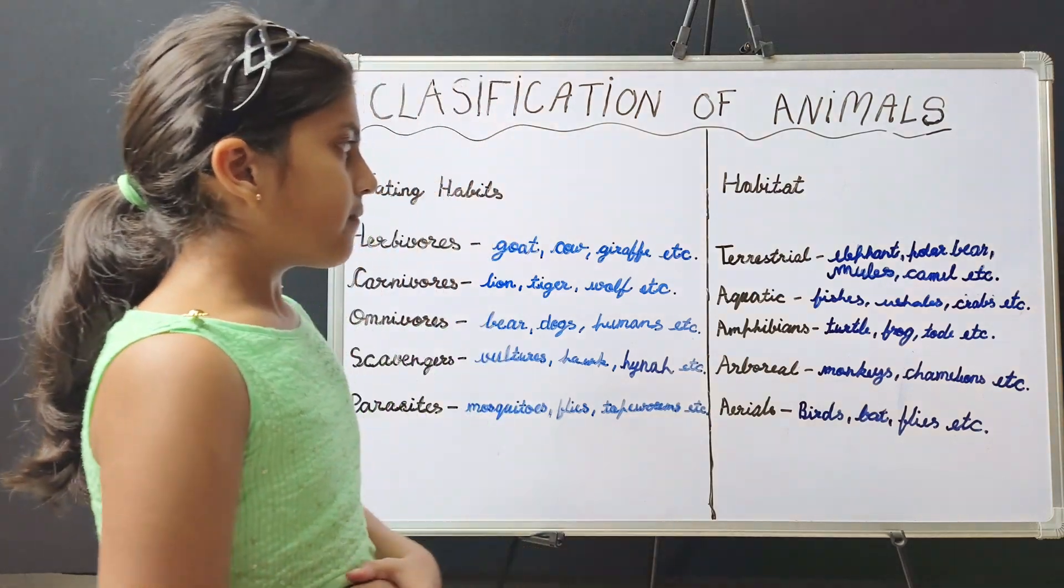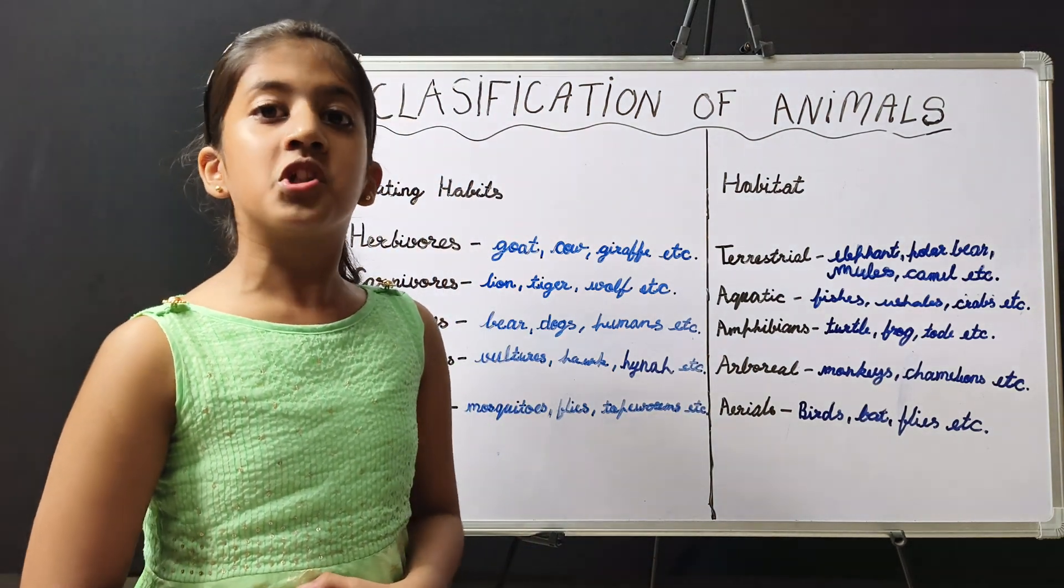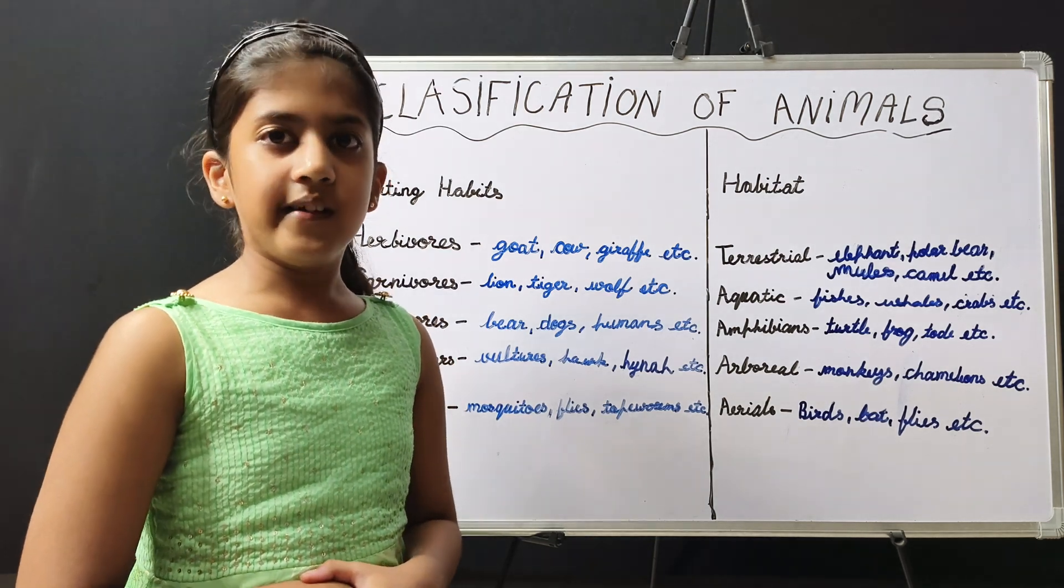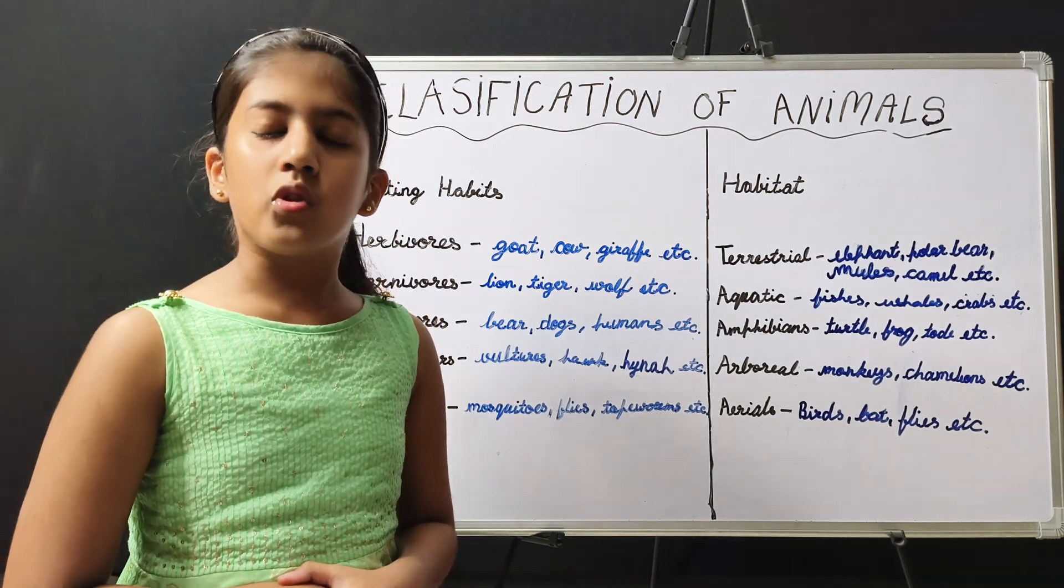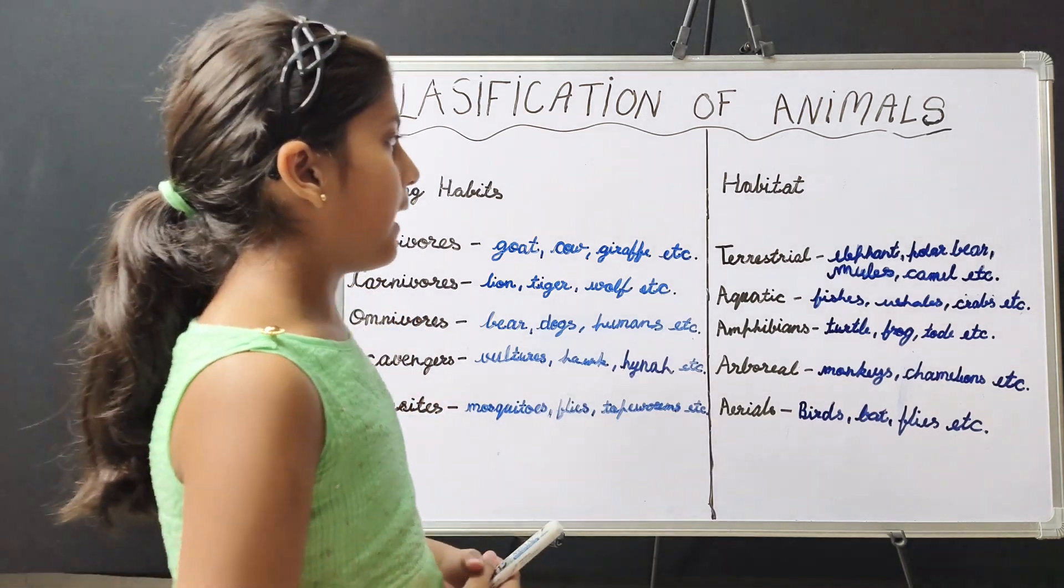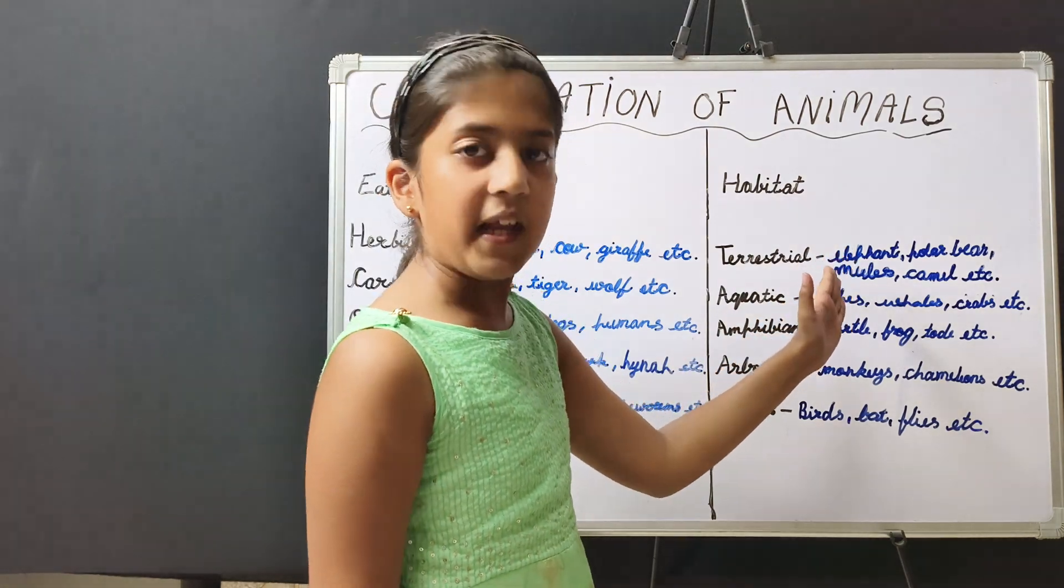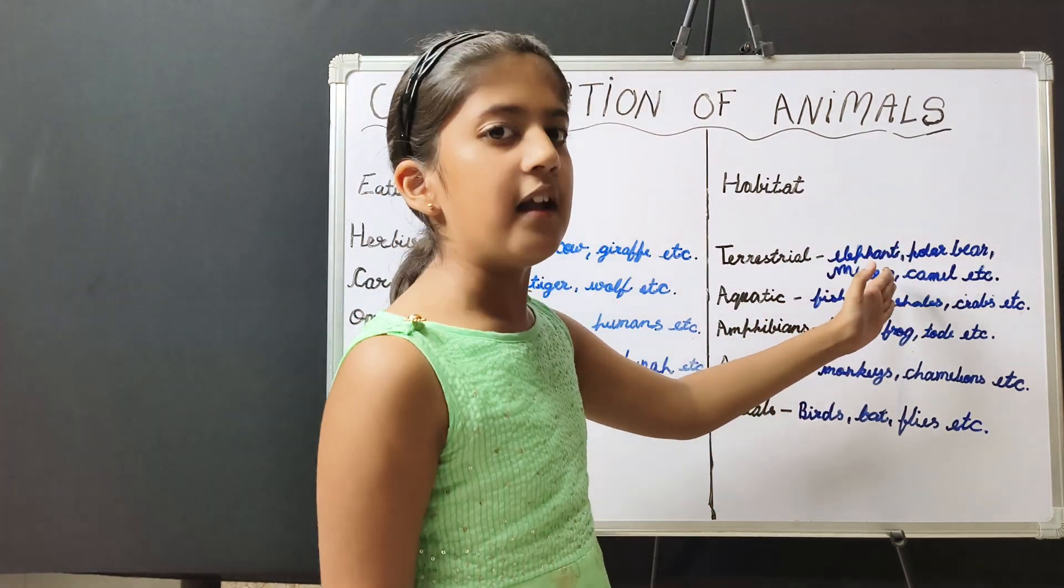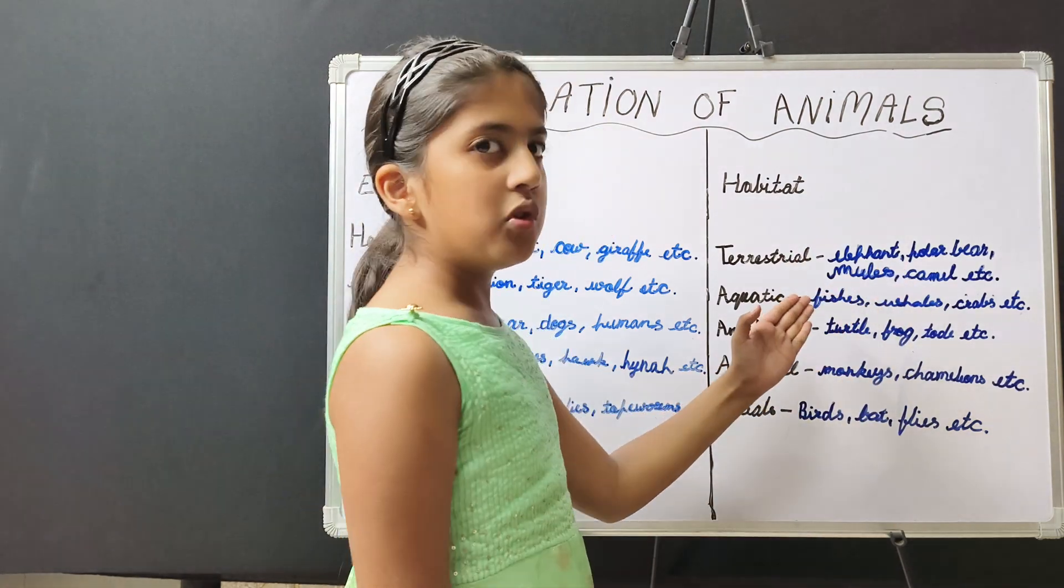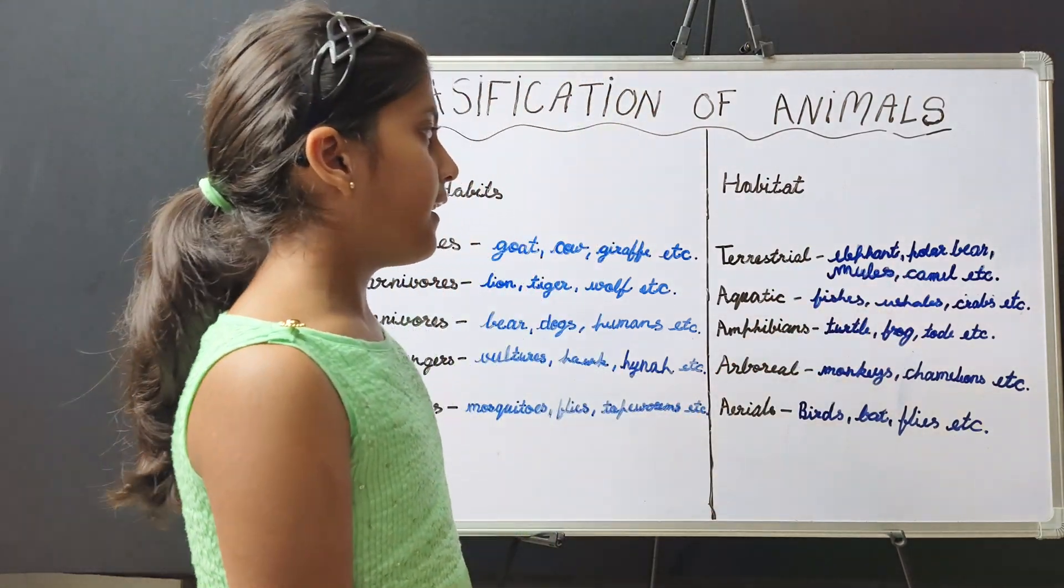Terrestrial animals are those animals which live on land. Land includes deserts, plains, snowy region, or mountain region. For example, elephant lives on plains, polar bear lives in snowy region, mules live in mountain region, camel lives in a desert, etc.